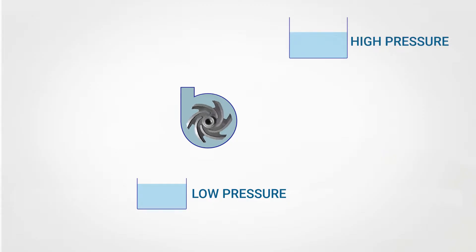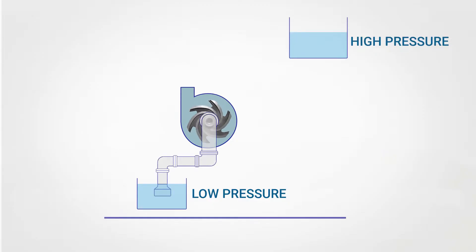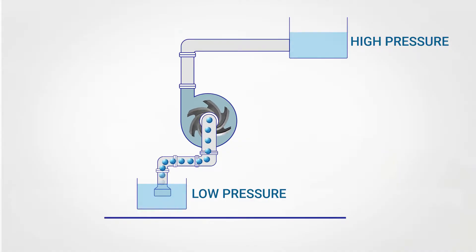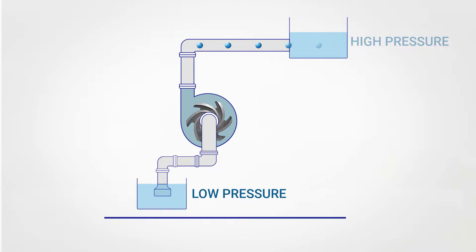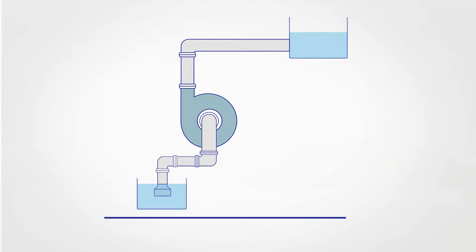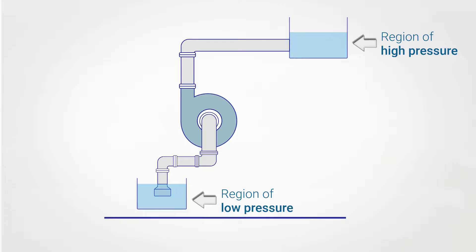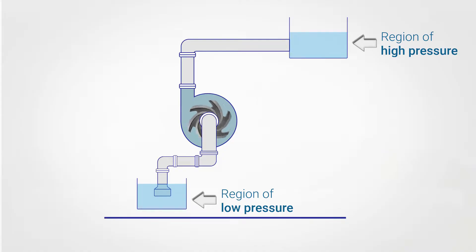The basic principle of centrifugal pumps is to transport volumes of fluid from a region of low pressure to a region of high pressure. Looking at this scheme, at the bottom we notice the first reservoir containing a fluid — in this case water — which represents our region of low pressure, while the reservoir at the top represents our region of high pressure. Thanks to the centrifugal pump and its inner impeller, water is transferred from the lower reservoir up to the higher one.